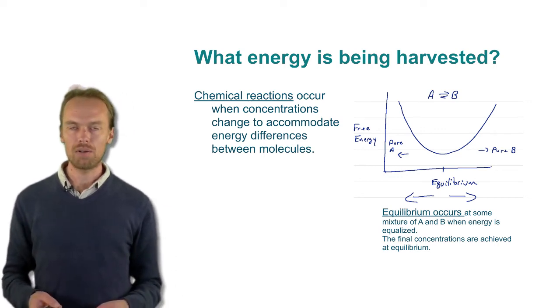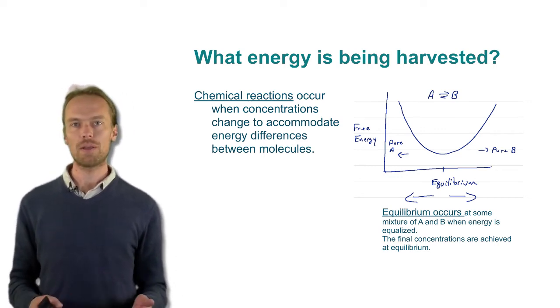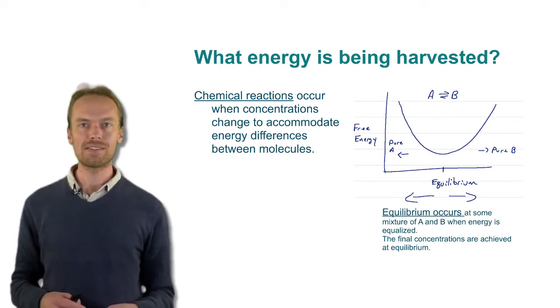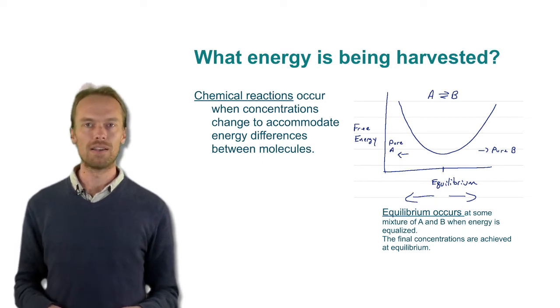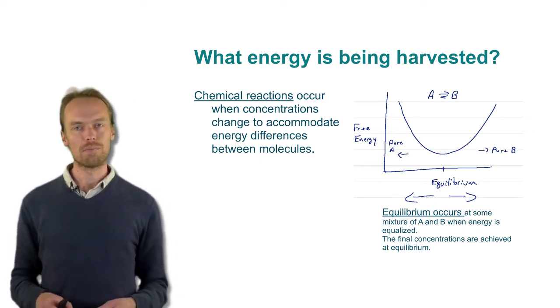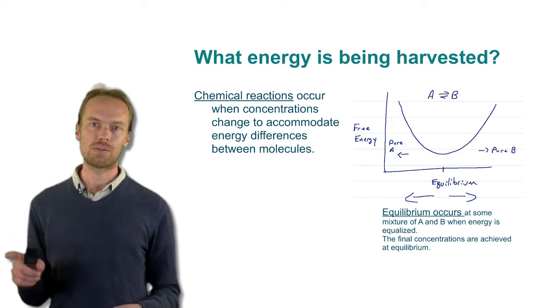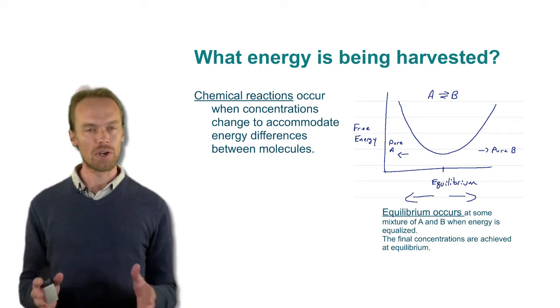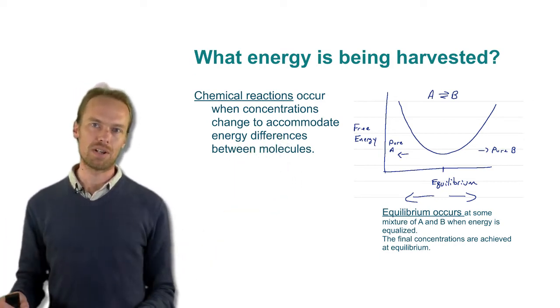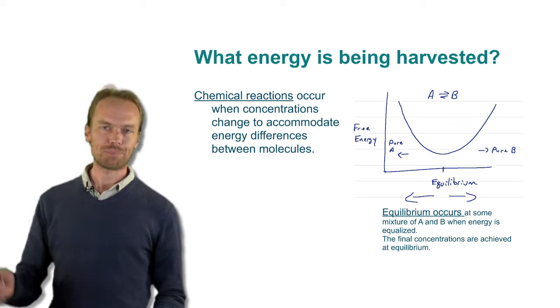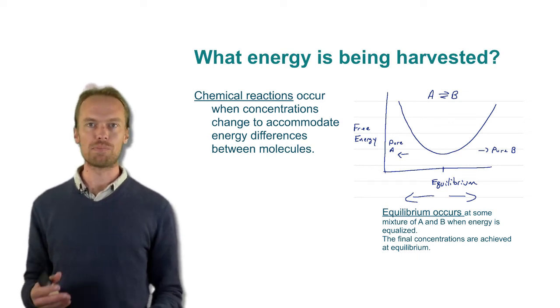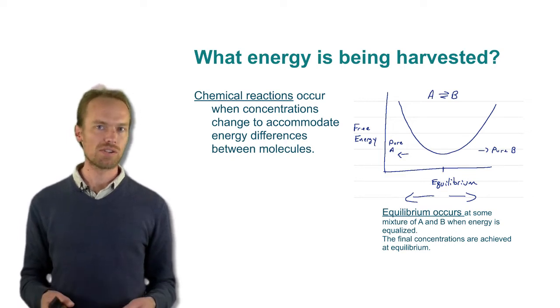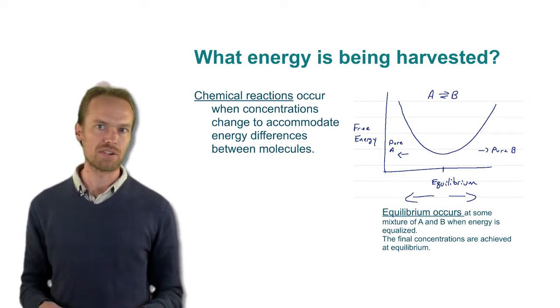Here what I've drawn out is a possible chemical reaction between A going to B and there is a place where energy is minimized and that place we refer to as the equilibrium. It's in the middle point where there's this well that's observed and to both sides of that well we could imagine going uphill in both directions and we'd eventually approach pure A or pure B and the lowest energy point will be at some mixture or concentration that minimizes the energy. So concentrations adjust themselves through chemical reactions to minimize energy differences.